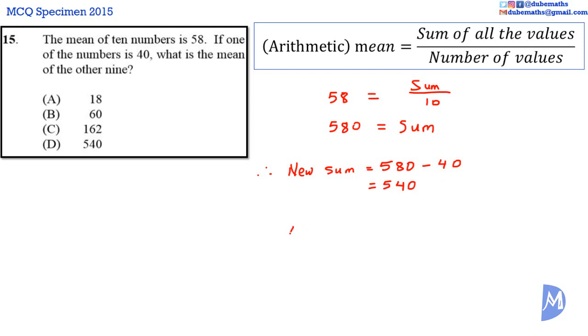Thus, the new mean is equal to the sum, 540, over the number of values, which is 9. 540 divided by 9. 9 into 5, 0. 9 into 54, 6. 6 nines are 54, so we have 0 remaining. 9 into 0 is 0. 540 divided by 9 is equal to 60. The new mean is equal to 60. The answer is B.